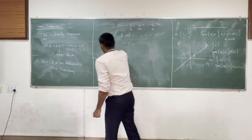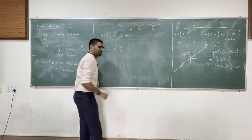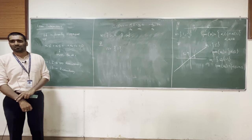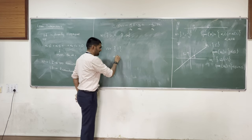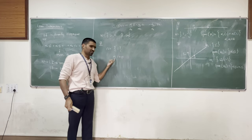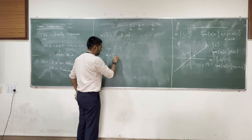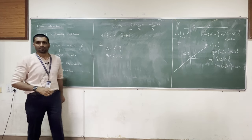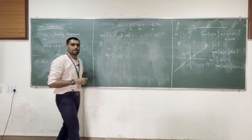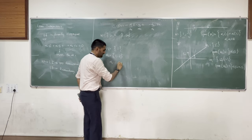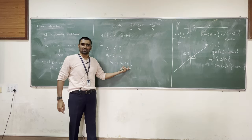Let's look at examples in R. Is the set {1} linearly independent? Yes - α·1 = 0 only if α = 0; there is no other real number that gives zero. What about {1, 2}? You can choose non-zero alphas: α₁·1 + α₂·2 = 0 can be satisfied with non-zero values. So this set is linearly dependent.